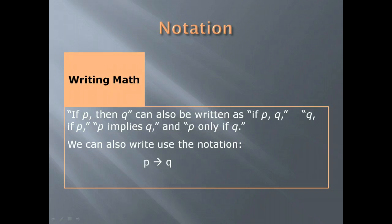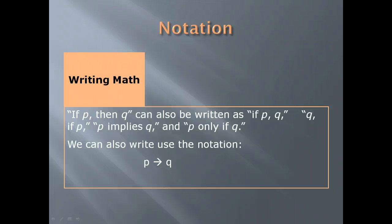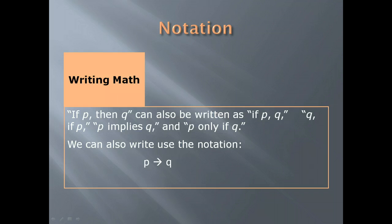When we write in math terms, we want to make sure we understand our notation. 'If P, then Q' can also be written as 'if P, Q,' or 'Q if P,' or 'P implies Q,' and 'P only if Q.' We can also use the arrow notation.